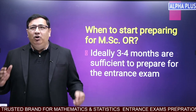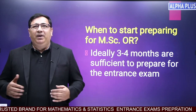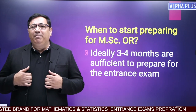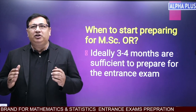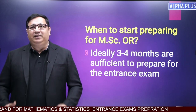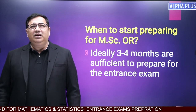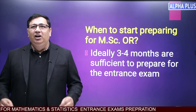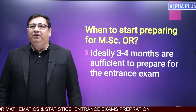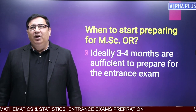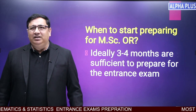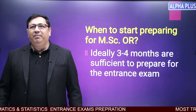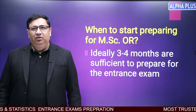If you want to prepare with Alpha Plus for MSc OR, it takes almost 3 to 4 months. Those who are in their 5th semester can start their batches from January and complete the course by May or June.